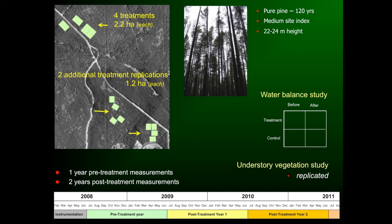We selected stands in the area south of Hinton, near the town of Robb. Our study site is a large, extensive single polygon — a single stand of very old, mature pine, about 120 years old, medium site index, about 23 to 25 meters high. We decided to focus on the modal pure pine stand representative of the center of mass for pine stand types in the province.